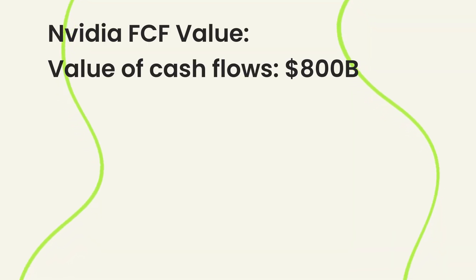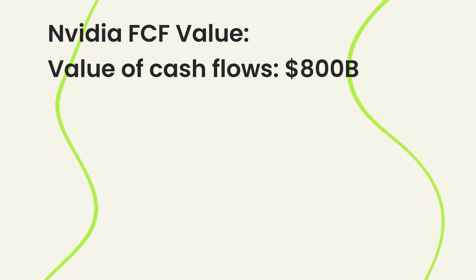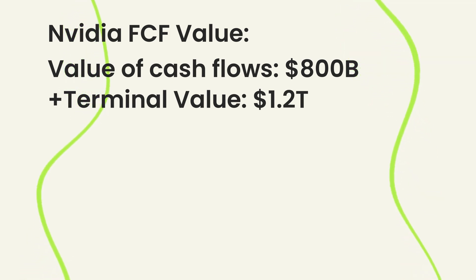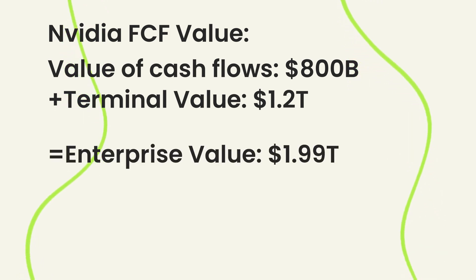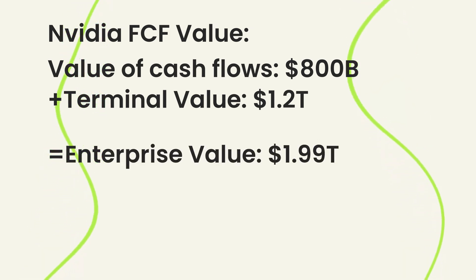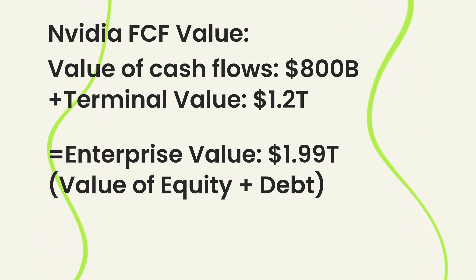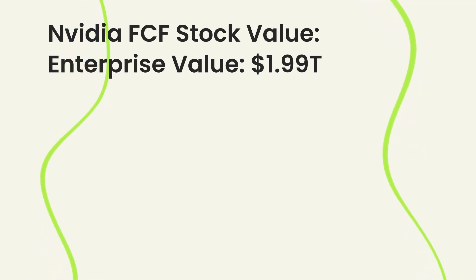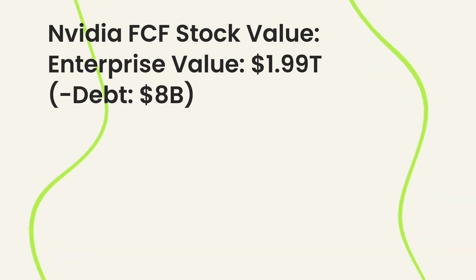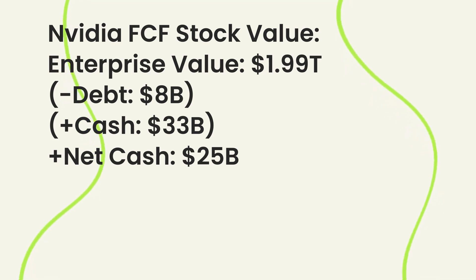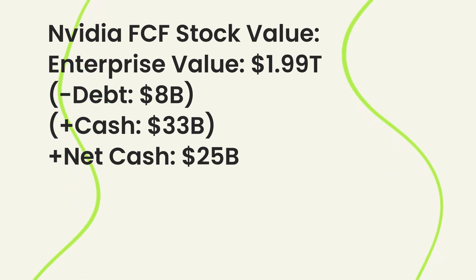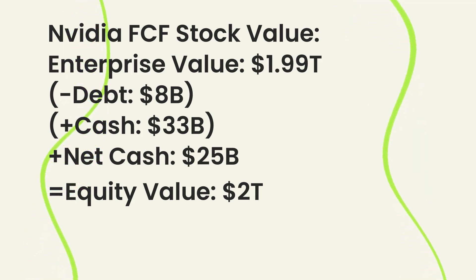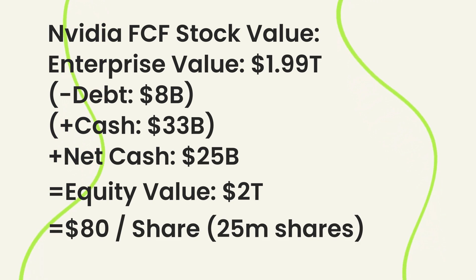Putting it all together: we have $800 billion in present value of all free cash flows expected for the next 10 years, and a terminal value of $1.2 trillion in present value. When we sum those, we get an enterprise value of $1.99 trillion — the total value of both equity and debt. To work out the value of the stock, which is just equity, we remove the net debt. NVIDIA has about $8 billion in debt; if they pay it off, they still hold about $25 billion in cash. We add that $25 billion because shareholders technically own that cash too. That totals to slightly over $2 trillion in equity value. With about 25 billion shares, that works out to about $80 per share.